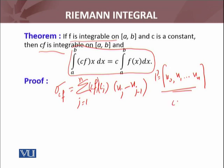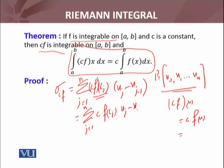Now I need to evaluate cf. The definition is cf(x), so that will be the summation from j equals 1 to n of cf(c_j) times (x_j minus x_{j-1}). Since c is constant, I can take that constant out of the sum: c times the summation from j equals 1 to n of f(c_j) times (x_j minus x_{j-1}).